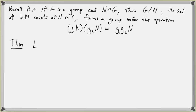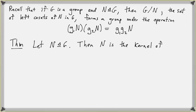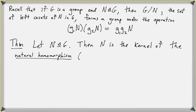Let's call this a theorem. Let N be a normal subgroup. Then N is the kernel of the natural homomorphism — that's the name of this homomorphism, the natural homomorphism, sometimes called the canonical homomorphism or simply the projection homomorphism.